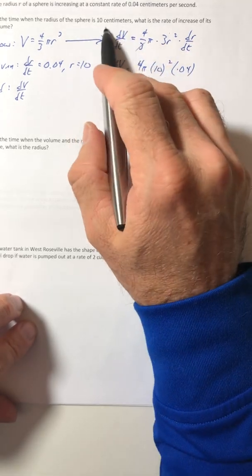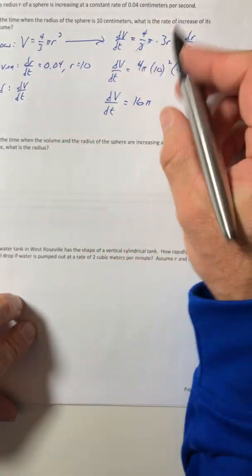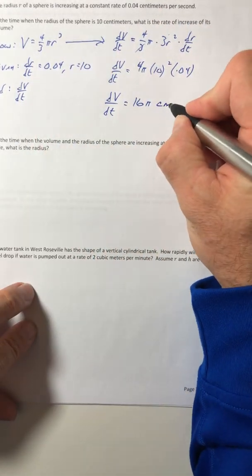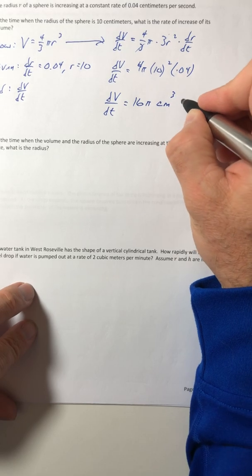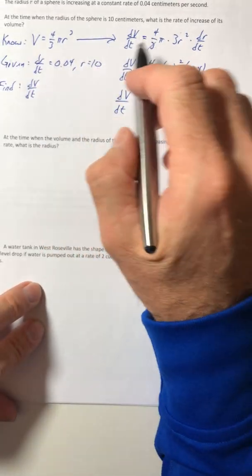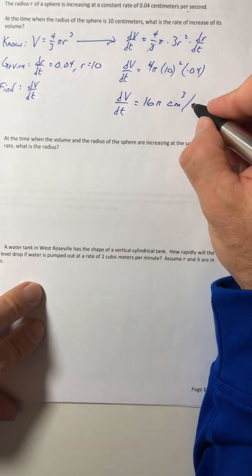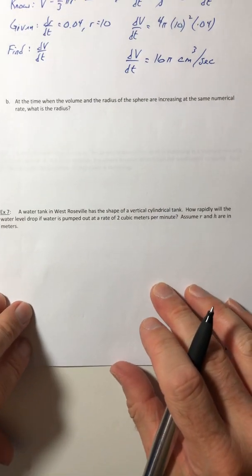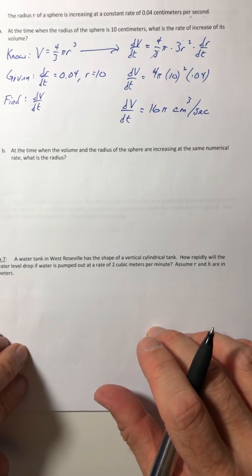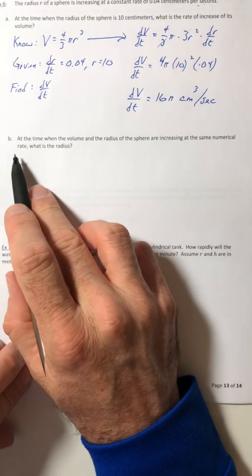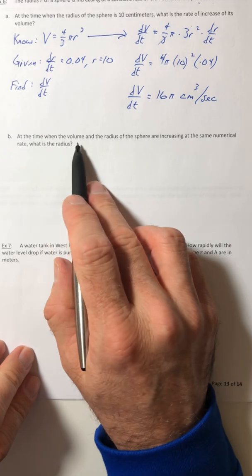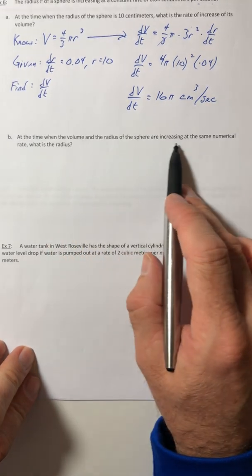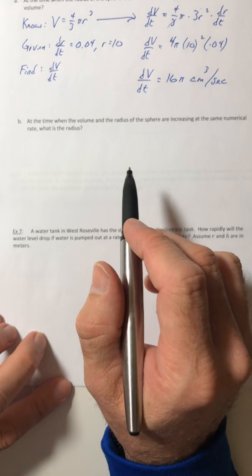And the units, well, the radius was centimeters, so the volume has to be centimeters cubed. And then the time is the same, so per second. Part B: At the time when the volume and the radius of the sphere are increasing at the same numerical rate, what is the radius?